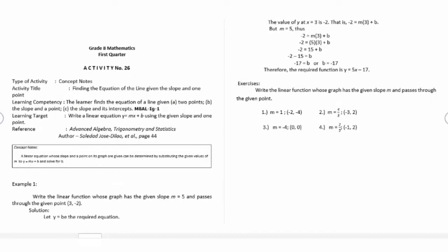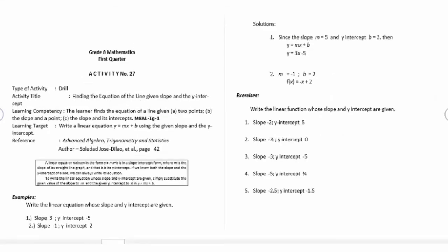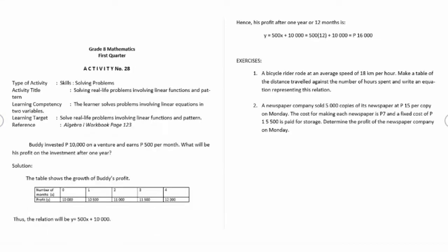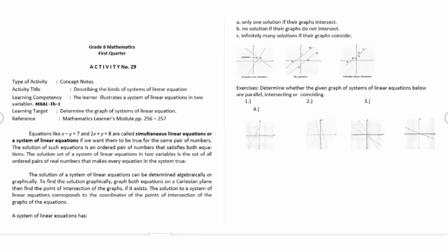Activity number twenty-six is finding the equation of the line given the slope and one point. Activity number twenty-seven is finding the equation of the line given the slope and the y-intercept. Activity number twenty-eight is solving real-life problems involving linear functions and patterns.